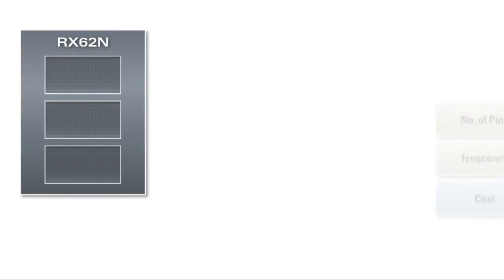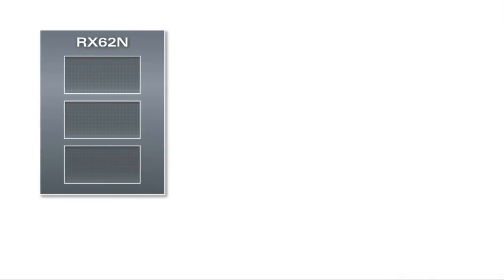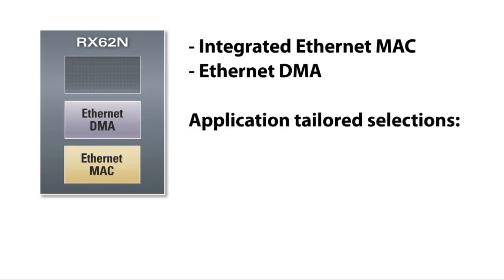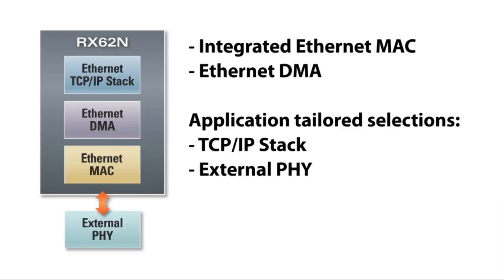RX makes it easy to add Ethernet to your embedded design, having an integrated Ethernet MAC, dedicated Ethernet DMA, and a flexible architecture which allows application-tailored selections of the TCP/IP stack and external PHY.